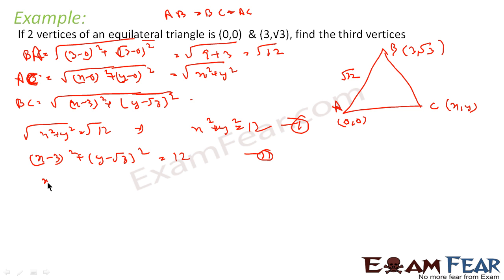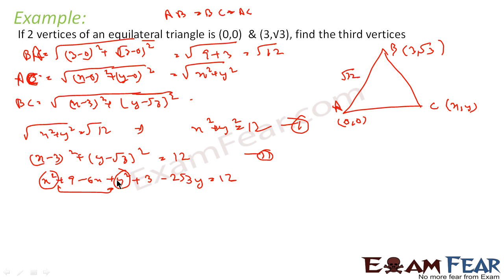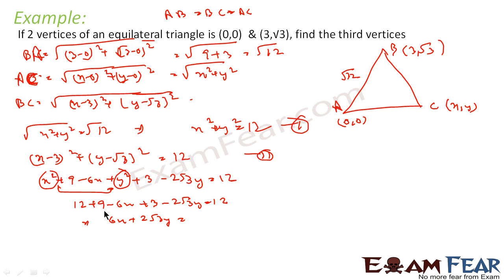Expanding the second equation: X² + 9 − 6X + Y² + 3 − 2√3·Y = 12. We know X² + Y² = 12, so substituting: 12 + 9 − 6X + 3 − 2√3·Y = 12. This gives 6X + 2√3·Y = 21. Dividing by 2: 3X + √3·Y = 12. This is the second equation.